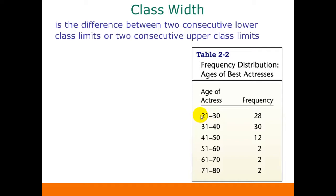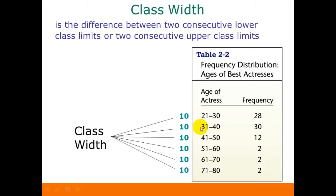To find the class width, you look at two lower class limits that are consecutive — for instance, the 21 and the 31 — and just find the difference between those two. So the class width is going to be 10. Notice that it's the same no matter which two consecutive lower class limits you look at, or if you look at two consecutive upper class limits — the difference is always 10 here.